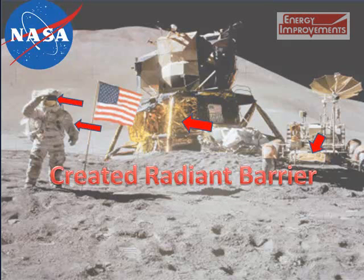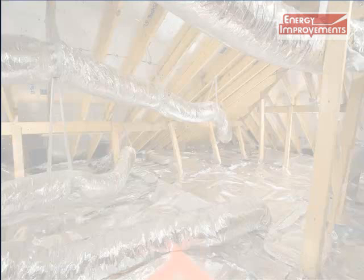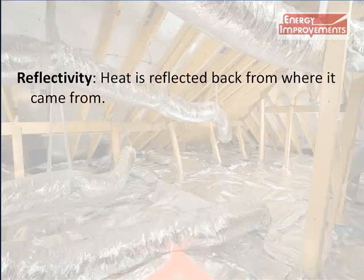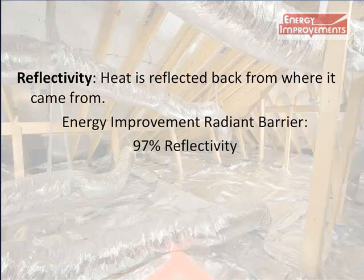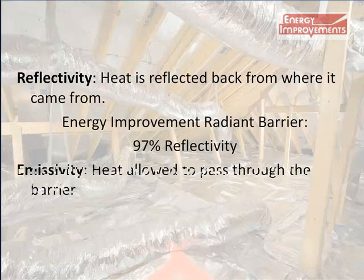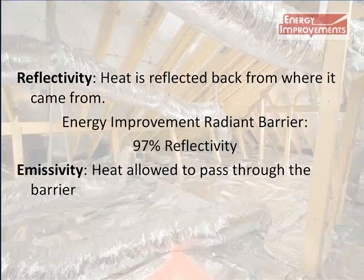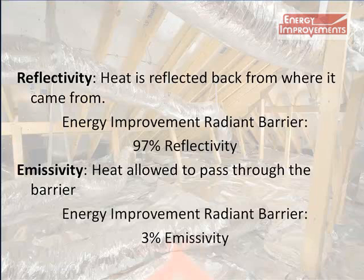The radiant barrier works off of two main principles. First, reflectivity — aluminum is reflective on the hot side, which means it will reflect the heat back from where it came from. The Energy Improvements radiant barrier has 97% reflectivity. Next, radiant barriers work off of the emissivity principle, which means the amount of heat that can pass through from the hot side to the cooler side. Energy Improvements' radiant barrier only allows 3% of radiant heat to pass through.